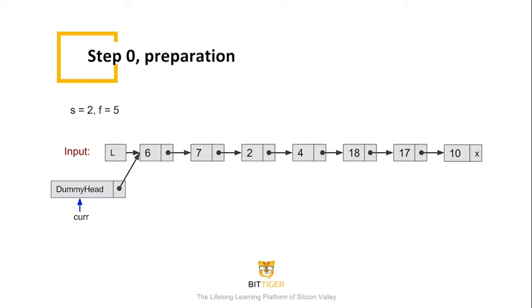In preparation, we first create a dummy node and make it point to the head node of the list. We also define another pointer, called current, which points to the dummy node in the beginning.